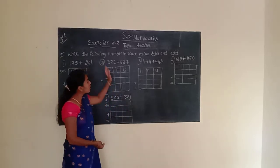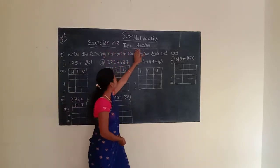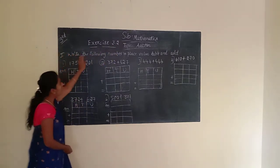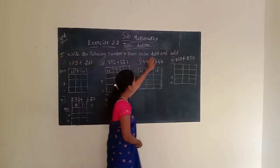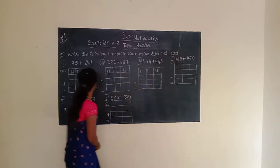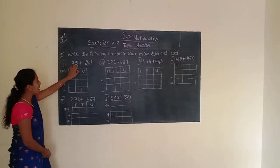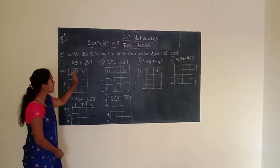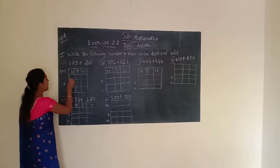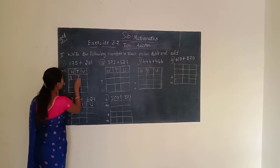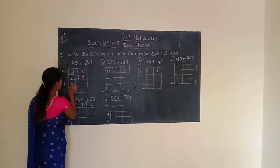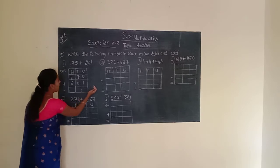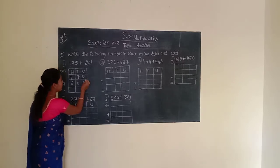Hi children, today we have continued the same lesson — addition, exercise 3.2. First question: write the following numbers in a place value table and add. The given number is 175 plus 201. Arrange this number in the place value chart. 175 plus 201. Now we have to start adding, beginning from the unit place.